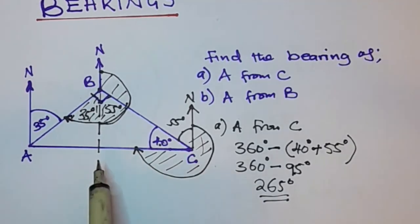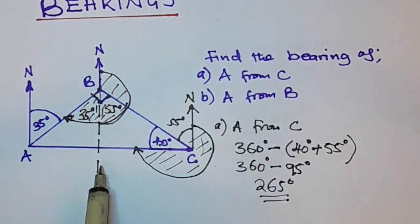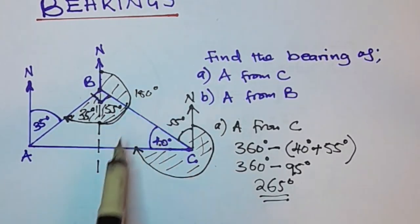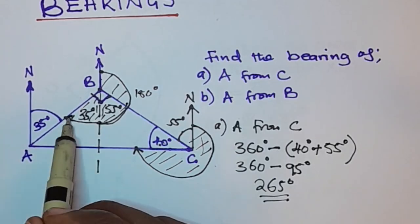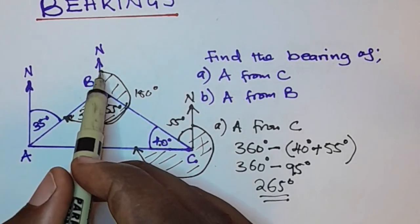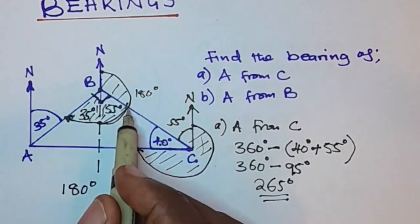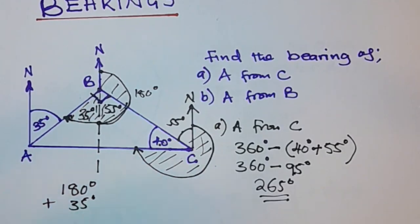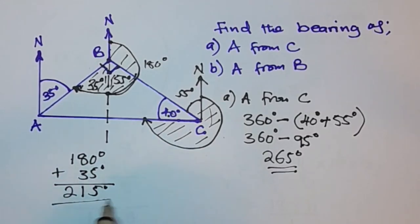When you look at this line here, it is a straight line, so angles from here going clockwise up to here equal 180 degrees — these are angles on a straight line. We are remaining with this small angle here. So the total bearing is 180 degrees, from here clockwise up to here on the straight line, plus this angle here which is 35 degrees, giving 215 degrees.